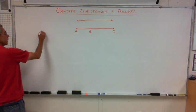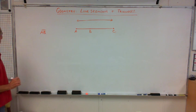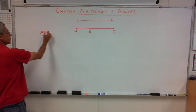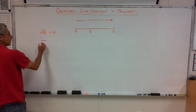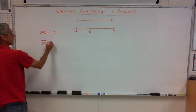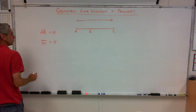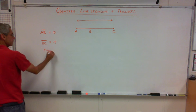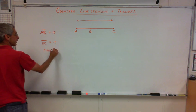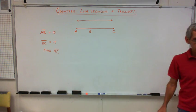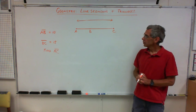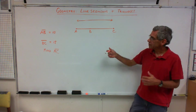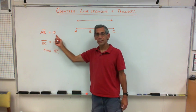I'm going to say, AB, line segment AB is equal to 10, and line segment BC is equal to 18. So, if I looked at this, I would say, okay, line segment AB is equal to 10.